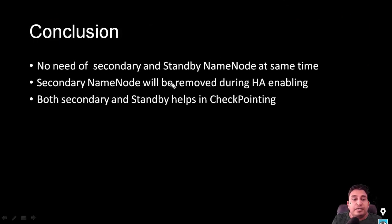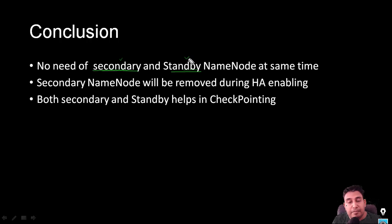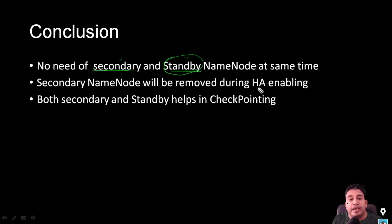To conclude: we don't need secondary name node and standby name node at the same time. Whatever checkpoint functionality secondary name node provides is also done by standby name node. So if you have standby name node, you don't need secondary name node. In an HA deployment, the secondary name node service is automatically removed and standby is added. Both standby and secondary name node help to do the checkpoint, but standby also provides high availability. Hope this is clear — thank you for watching, see you in the next topic.